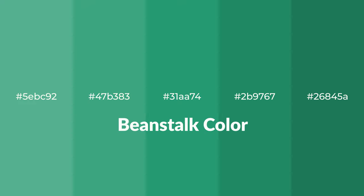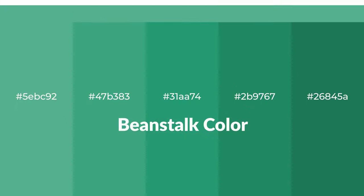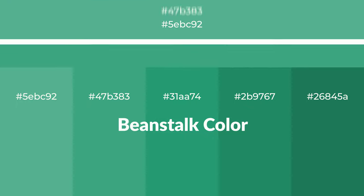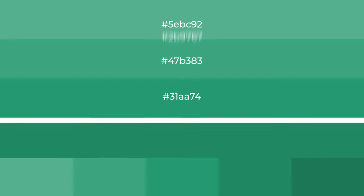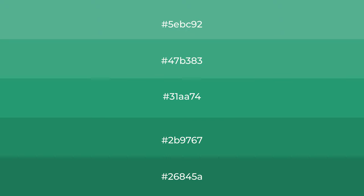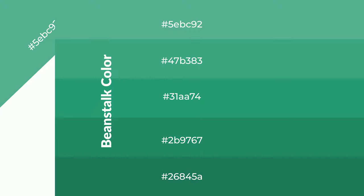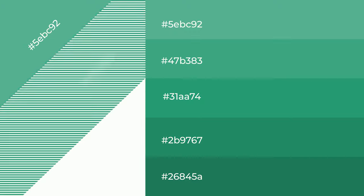For your next project, to generate tints of a color, we add white to the color, and tints create light and exquisite emotions. To generate shades of a color, we add black to the color, and it is used in patterns and 3D effects.